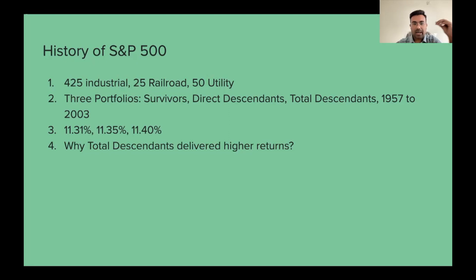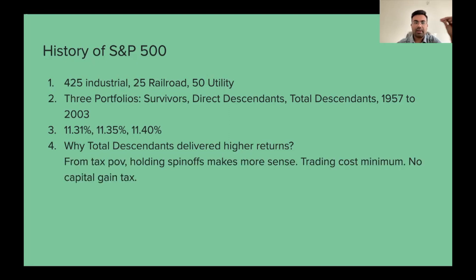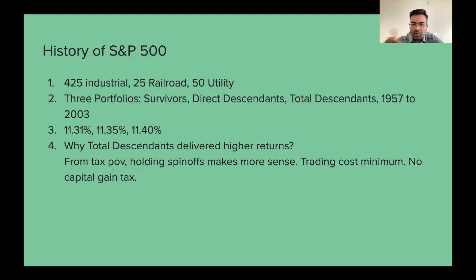Why did the Total Descendants portfolio give the highest return? The most important point is that when we don't do any activity in our portfolio — no buying and selling — the trading costs are minimized. If you have spin-offs or extra shares and you don't sell them, the trading cost is very low. When you do more trading, it impacts and reduces your overall returns.